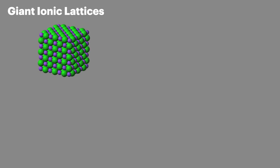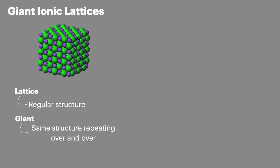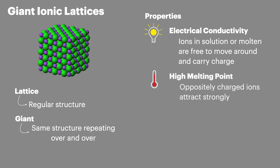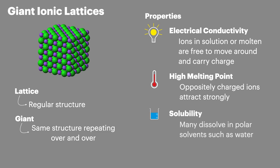Ionic compounds form what we call a giant ionic lattice. Lattice means a regular structure and giant means that the same structure is repeating over and over. Giant ionic lattices have certain properties: they can conduct electricity when dissolved in solution or in a molten liquid, because the ions are free to move and carry the charge. They also have a high melting point, because oppositely charged ions attract each other strongly. Many ionic compounds are also soluble and will dissolve in polar solvents such as water.